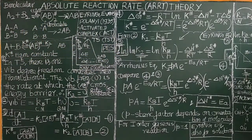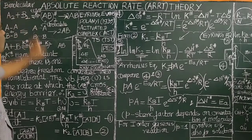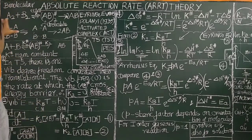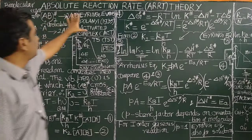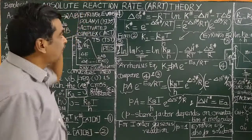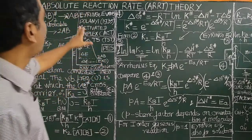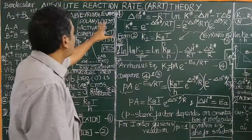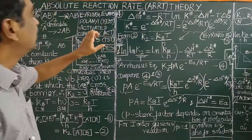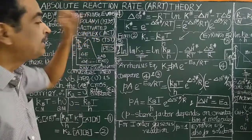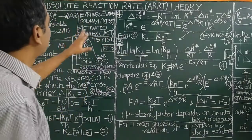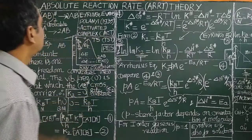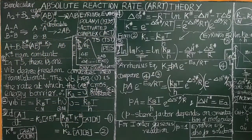It is applicable for bimolecular reactions. This theory was developed by Eyring, Evans, and Polanyi in the year 1935. This theory was developed by these three scientists.